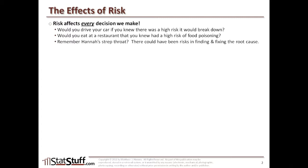In the prior video about my daughter Hannah, she had arthritis as a symptom of strep throat, which was the root cause. In that situation, we were taking a risk that the antibiotics were safe enough for her to take, and that any risks from the antibiotics were far less compared to the pain she was feeling. That can happen with other medical situations too, where sometimes the side effects of medication can be worse than the original symptoms. So there are risks involved in every single decision we make, albeit some can be very small. Prudent business decisions should at least account for, understand, and measure the risk involved.